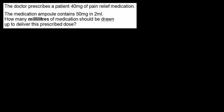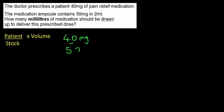Question two: a doctor prescribes a patient 40 milligrams of pain relief. The medication ampoule contains 50 milligrams in 2 millilitres. How many millilitres of medication should be drawn up? Using the formula: what I want to give the patient over what I've got in stock, times the volume. I want to give the patient 40 milligrams, in stock I have 50 milligrams, and the stock volume is 2 millilitres.